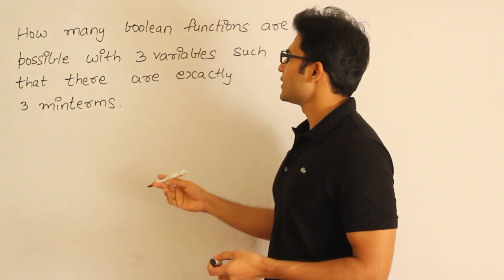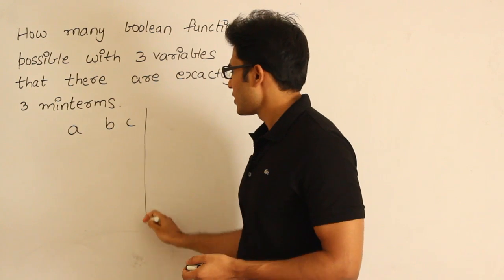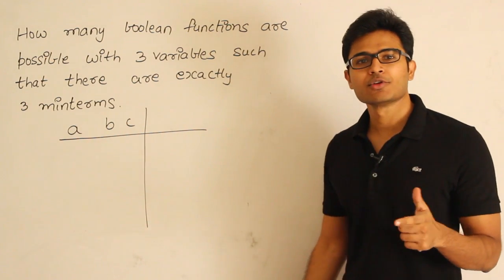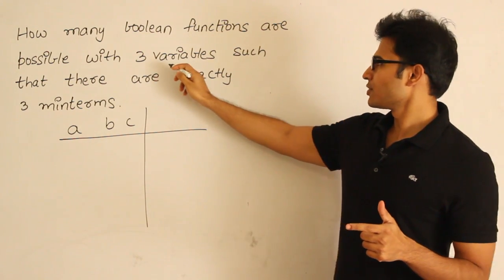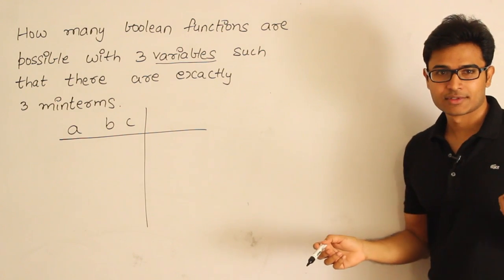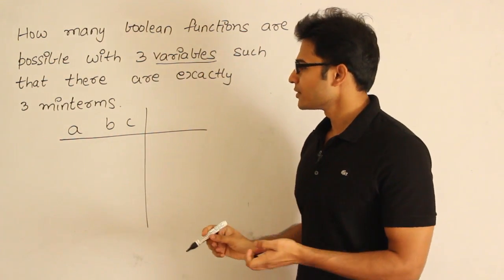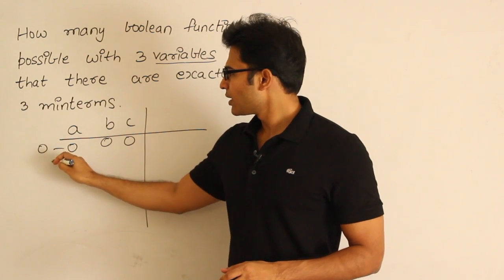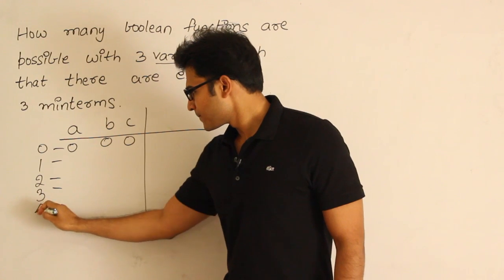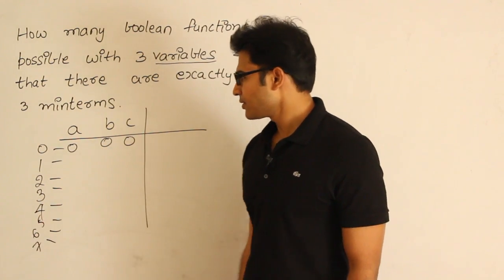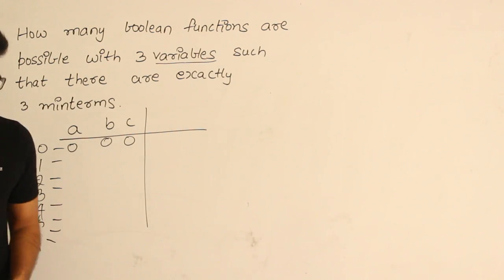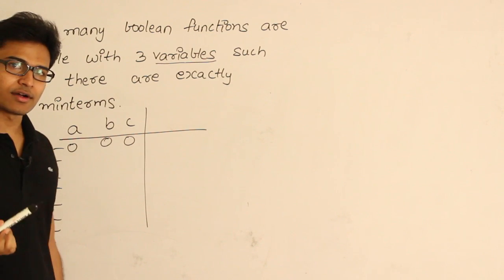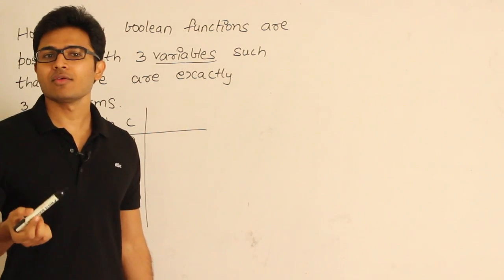Let's say three variables are A, B, C. If we look at the truth table, how many combinations will there be for the inputs? Since there are three variables, there are 2 power 3 combinations — assume Boolean variables since nothing else is given. So if you look at all rows, they go from 0 to 7, giving us 8 rows. Exactly three min terms means only three input combinations should be assigned one, and all others assigned zero.